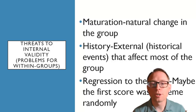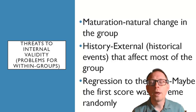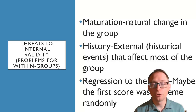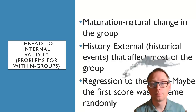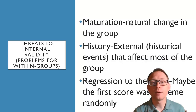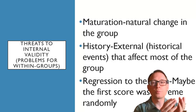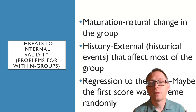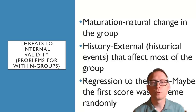A history change is an external or historical event that affects most of the group. For example, when COVID happened, that was a historical event that could have changed happiness. Maybe we measured happiness in January, COVID happened in March, and we measured happiness again right after the last final — but all of those people went through remote teaching and COVID, and that could have affected their happiness. That's a historical external event that might have changed the outcome instead of your manipulation.